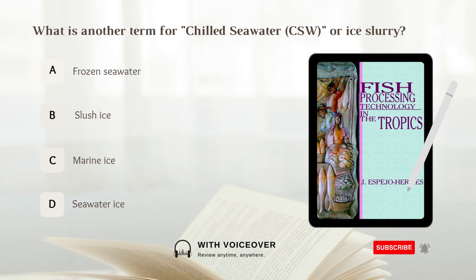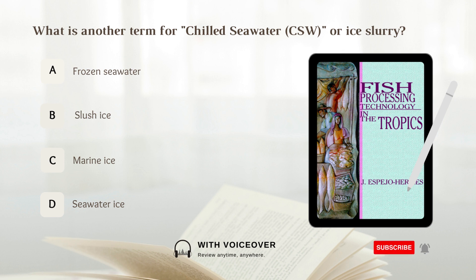What is another term for chilled seawater or ice slurry? A. Frozen seawater. B. Slush ice. C. Marine ice. D. Seawater ice. Answer: B. Slush ice.